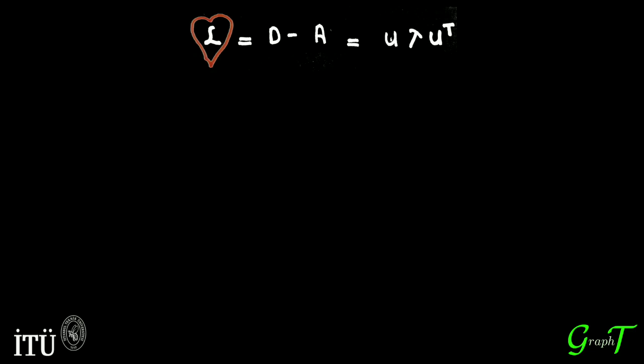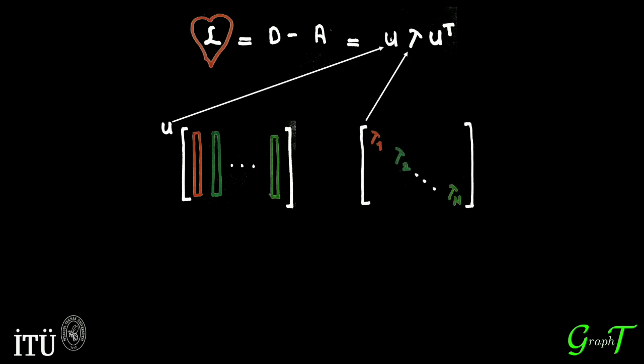The eigenvalue and eigenvectors are calculated by eigenvalue decomposition. U is eigenvector matrix for Laplacian. Lambda equals the diagonal matrix for eigenvalues. U to the T equals the transpose of the eigenvector matrix U.